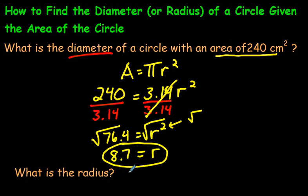This is the radius. Now that is really the answer right down here. It says, what is the radius? Well, it's 8.7 centimeters. The question said, what is the diameter, though?